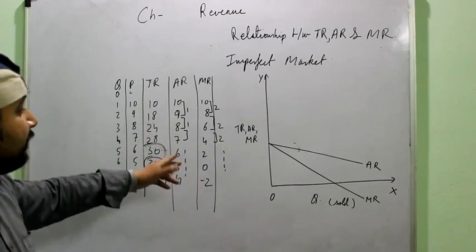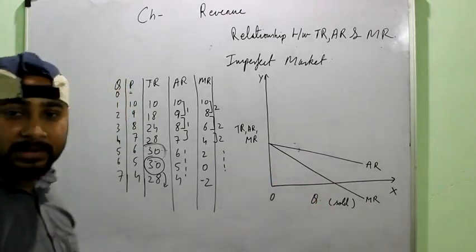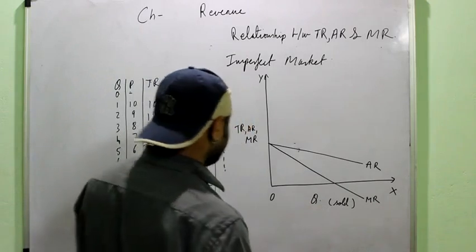Or you can simply say, it is other way round that output can be increased only by decreasing the price. So AR is downward sloping and similarly MR is also downward sloping.